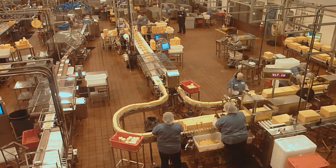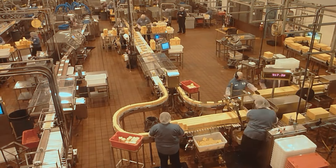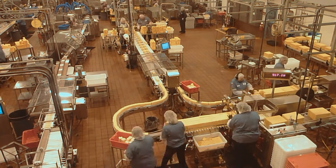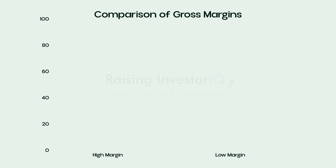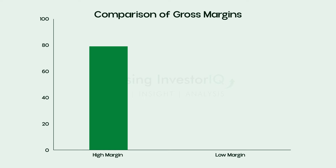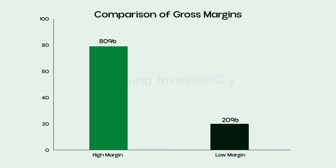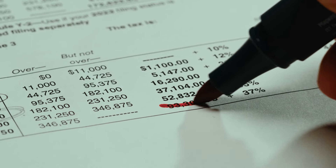Why should you as an investor care about gross margin? Gross margin tells you a lot about a company's operational efficiency and competitive strength. A higher gross margin generally indicates that the company has better control over its production costs and is potentially able to charge premium prices for its goods or services — suggesting strong pricing power in its market, an essential factor for maintaining long-term profitability.